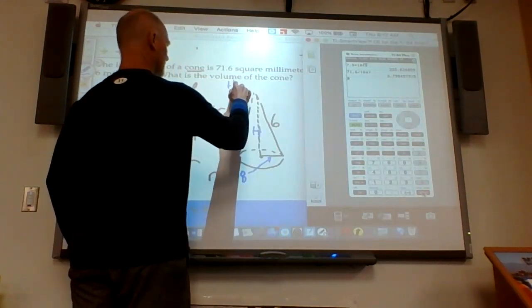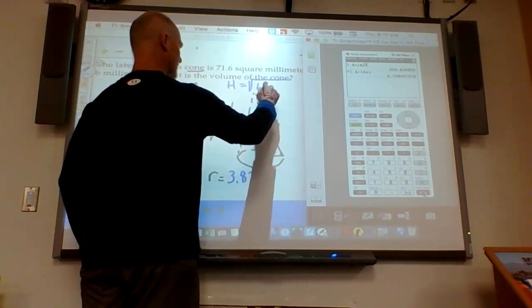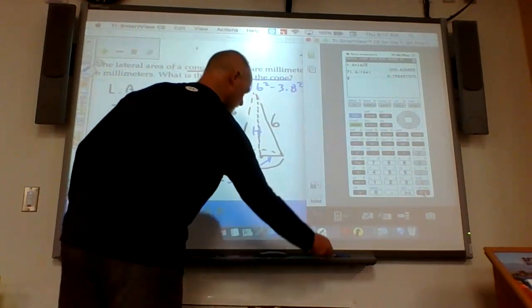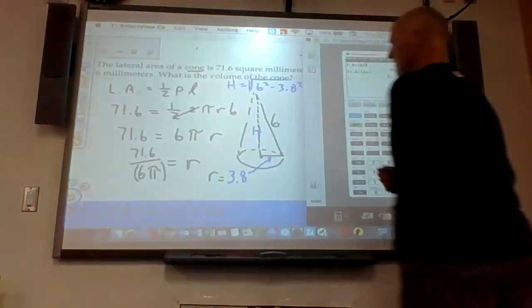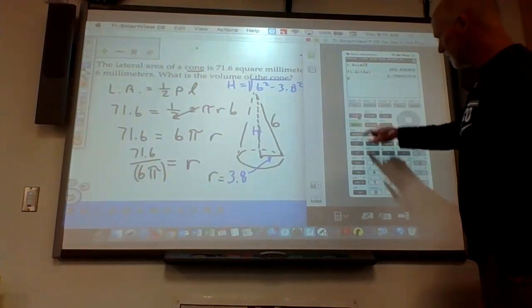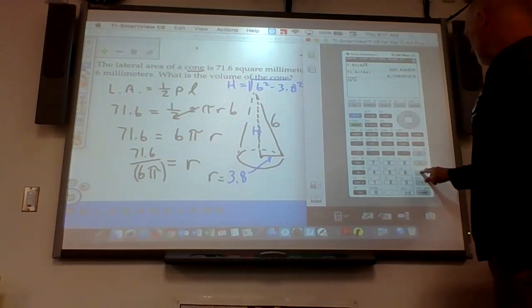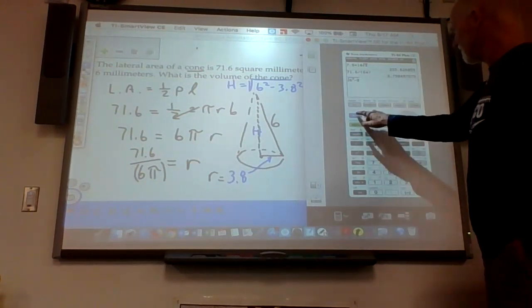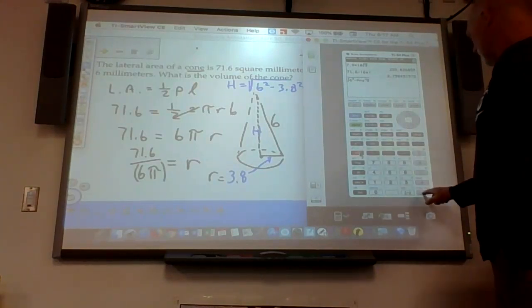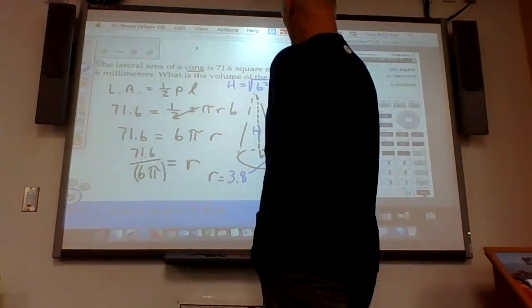I'm going to go h is equal to the square root of 6 squared minus 3.8 squared. So I can use this value to help me be a little more precise. So second square root, and I go 6 squared minus, I can refer to second answer, and then square it, and I'll get what my height is. They say it's 4.6.